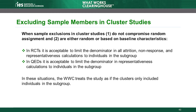When sample exclusions in cluster studies do not compromise random assignment and are either random or based on baseline characteristics, the WWC limits all attrition, non-response, and representativeness calculations to include only the individuals in the remaining sample. For example, a study might randomly assign classrooms to conditions but analyze only students identified as low-performing on a baseline assessment. Because the exclusion does not compromise random assignment and is based on a baseline characteristic, it should not count as attrition or as individual non-response.